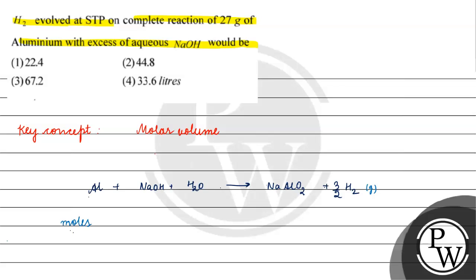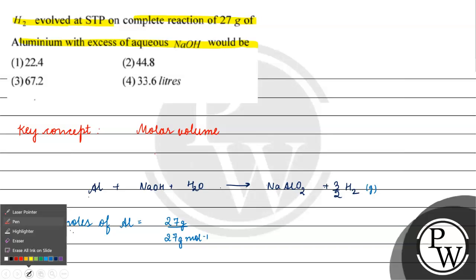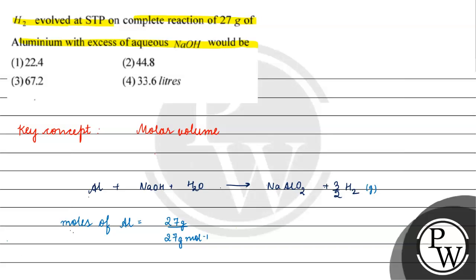The number of moles of aluminium equals mass divided by atomic mass, which is 27 grams divided by 27 grams per mole. This equals one mole of aluminium.